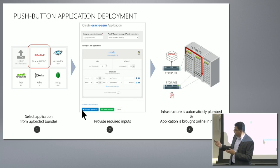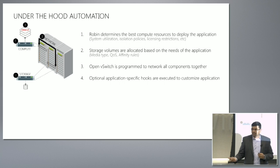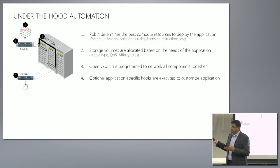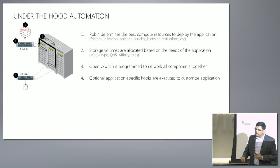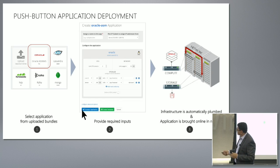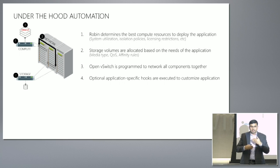So what happens under the hood? Four things: Number one, we determine the right compute resources based on current utilization, isolation policies, and licensing restrictions — for example, Oracle is very strict with licensing, so you might only want to use certain nodes for it. Number two, storage volumes are allocated based on QoS parameters the user specifies, such as IOPS limits, and we figure out which nodes, which disks, and which IO scheduling to use. Number three, we use Open vSwitch underneath for networking, programming it to plumb IP addresses and do network wiring so containers can talk to each other. And four, optional app-specific hooks are executed at the right places.